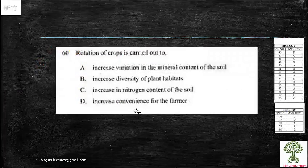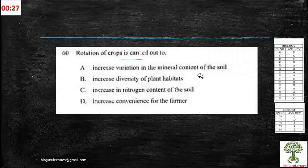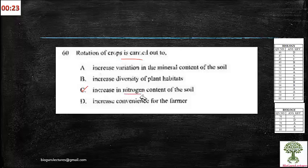Next is the 60th one, rotation of crops is carried out to increase nitrogen content of the soil. So there is a main purpose than the other three explained here.